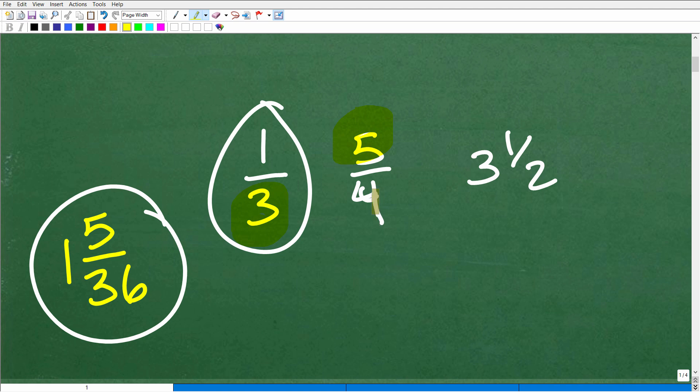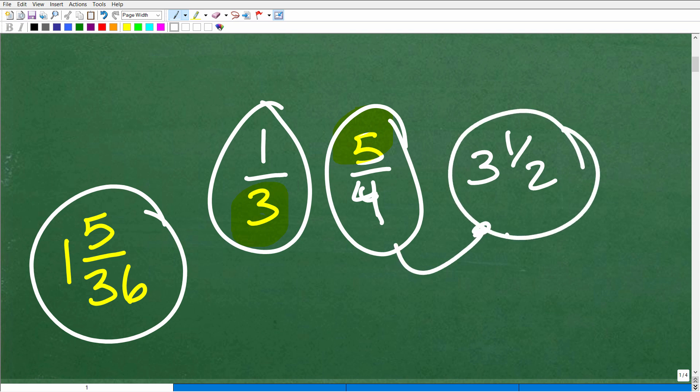But when you have the top number, the numerator, bigger than the bottom number, the denominator, this is called an improper fraction. And we can write improper fractions as mixed number fractions.